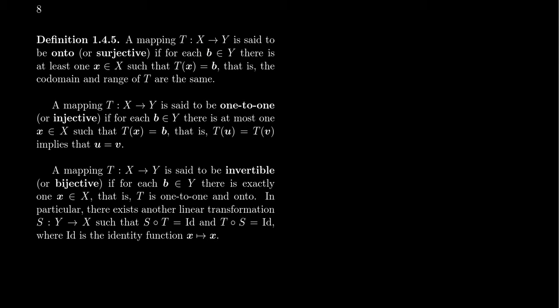We say that a map is onto — the more formal term is surjective, but in the United States they are commonly referred to as onto maps. We say that a function is onto if for each vector in the codomain there's at least one vector in the domain such that T of X equals B. In other words, the codomain and the range, the so-called image of the function, are one and the same thing.